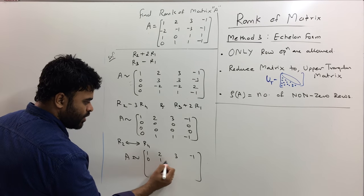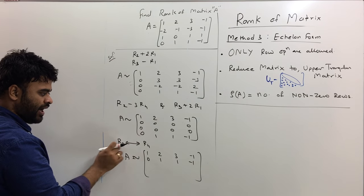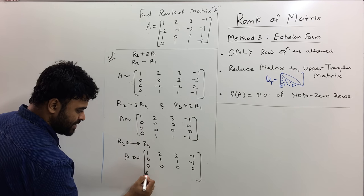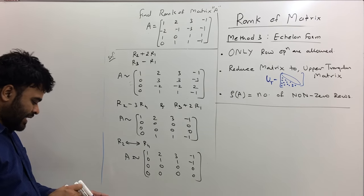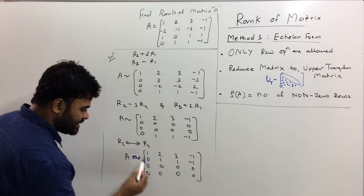If I do that, R2 and R4, if I switch them, this A will become 1, 2, 3, minus 1, 0, 1, 1, minus 1. That's switched, swapped R2 and R4. And now R2 comes here so I get 0, 0, 0, 0. Now if you look at this matrix, the reduced form of A, you will see this is the diagonal of the matrix.